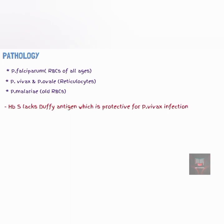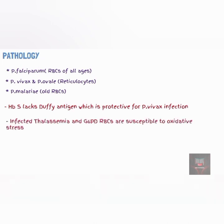In people with thalassemia and glucose-6-phosphate dehydrogenase deficiency, or G6PD deficiency, infected red blood cells are prone to oxidative stress. Thus, they are quickly destroyed before the Plasmodium matures into schizonts. Therefore, thalassemia and G6PD deficiency confer some amount of immunity against malaria infection.